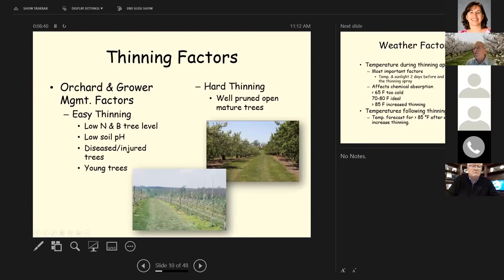Looking at orchard and grower management factors. Things like low nitrogen and boron in the tree. Low soil pH, diseased or injured trees or young trees thin easier. Well pruned open mature trees are a little harder to thin.